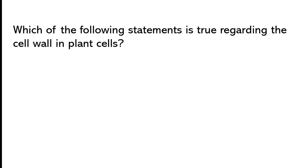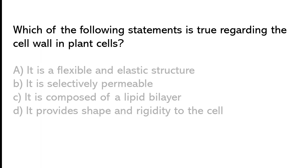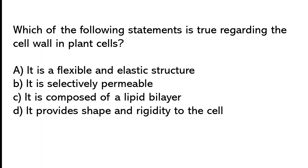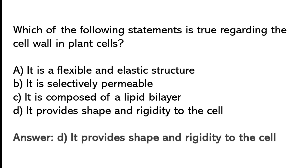Which of the following statements is true regarding the plant seal wall in plant seals? It is a flexible and elastic structure. It is selectively permeable. It is composed of a lipid bilayer. It provides shape and rigidity to the seal. The correct answer is option D: It provides shape and rigidity to the seal.